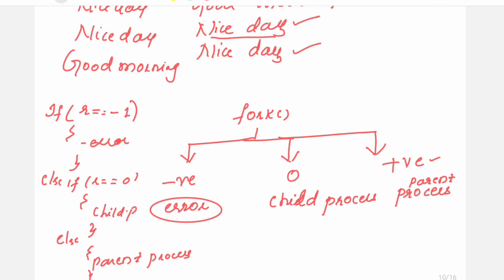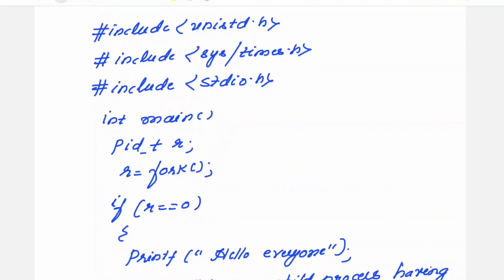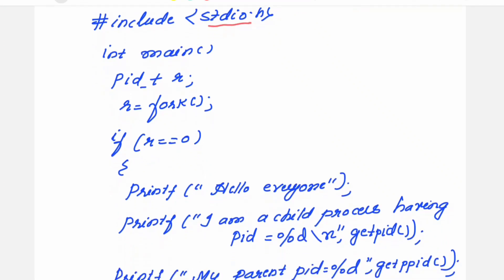By checking the return value of the fork system call, we can find out whether it is a parent process, child process, or there was an error. If you want to implement this in C, you can use an if-else ladder. If the return value r is negative, write 'error'; else if r equals zero, it is a child process; else it is a parent process. You can use this else-if ladder to identify which output lines came from which process.